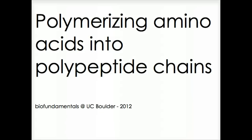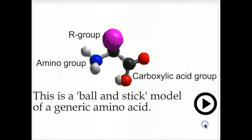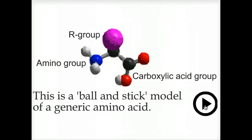Polymerizing amino acids into polypeptide chains. This is a ball-and-stick model of a generic amino acid. You can identify the amino group, the carboxylic acid group, the central carbon, and the R group.